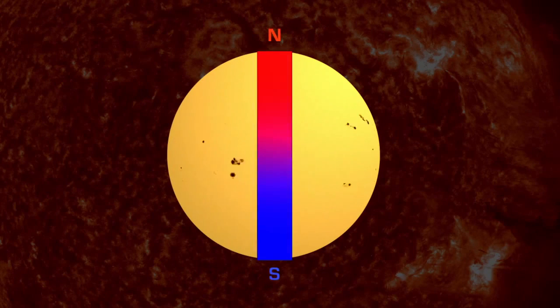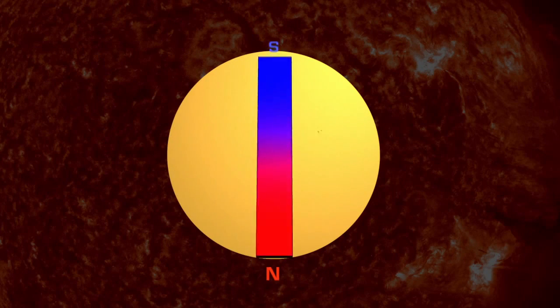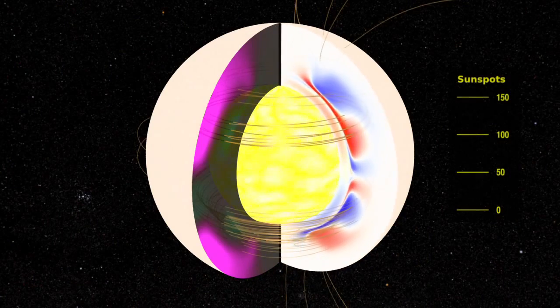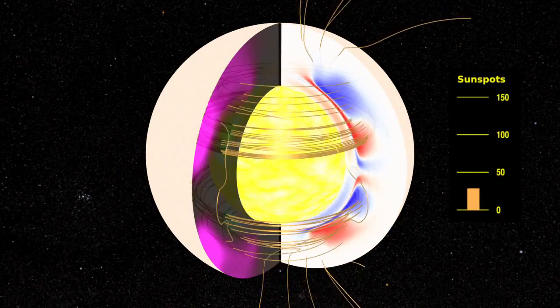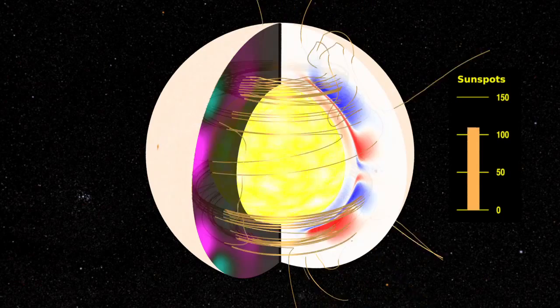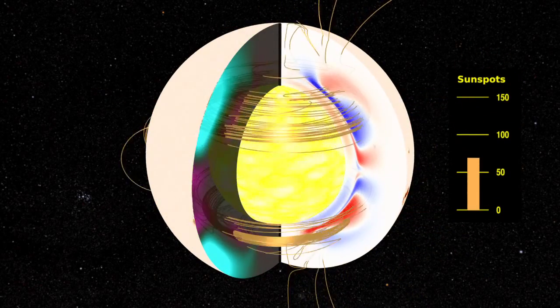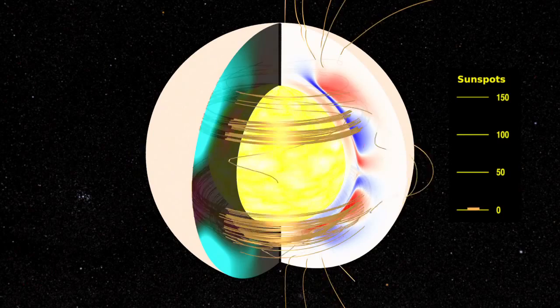Every 11 years, the Sun's poles flip. North becomes south, and south becomes north. So every 22 years, the poles return to the position where they started the cycle. The flip is due to the complex movement of magnetic fields inside the Sun that are constantly stretching, twisting, and crossing as solar material bubbles up from the Sun's core. But the exact pattern of movements is not yet mapped out.